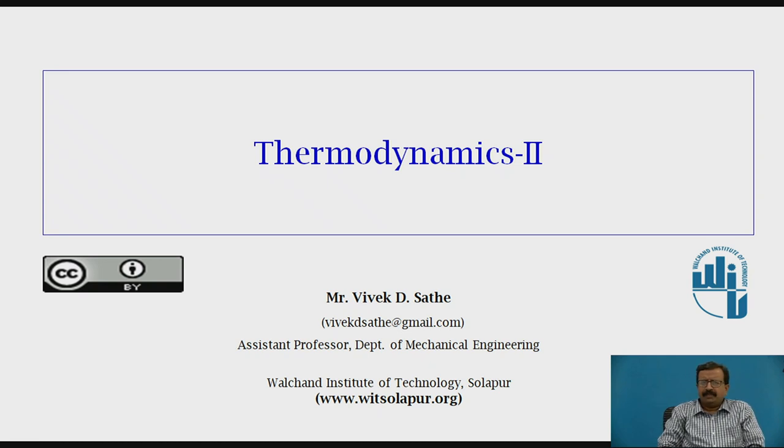Now let us move to Thermodynamics 2 session. Already we have studied in the first part what is system, what is surroundings, and how we define heat and work and other parameters like open system, closed system, and isolated system. Work and heat are phenomena of energies in transit. We have seen the analogy with the cloud and rain.